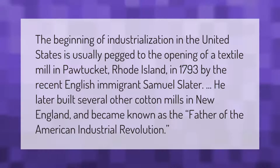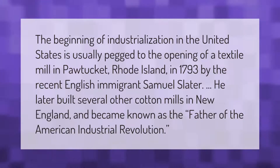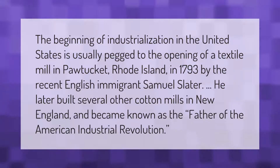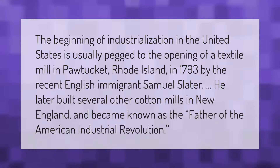The beginning of industrialization in the United States is usually pegged to the opening of a textile mill in Pawtucket, Rhode Island in 1793, by the recent English immigrant Samuel Slater. He later built several other cotton mills in New England and became known as the father of the American Industrial Revolution.